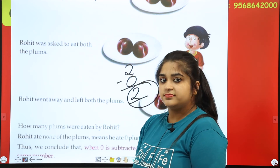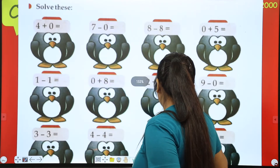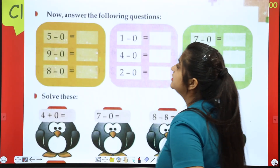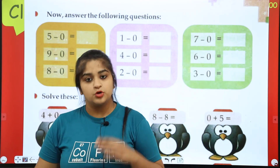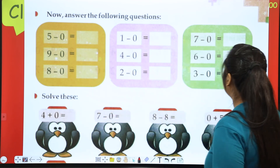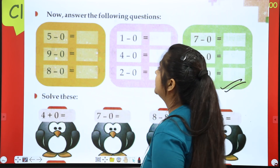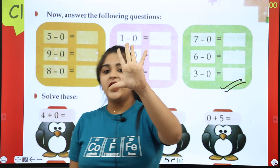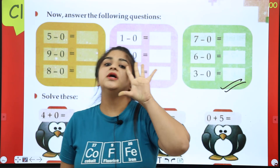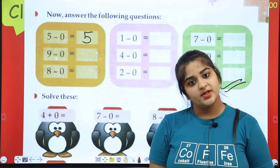Concept clear? Very good. Next page — page number 35. If we minus zero from any number, then we get the same number. You have to complete this exercise. For example, 5 minus 0: zero means nothing, so you don't have to do anything. The answer will be 5. So we will write 5 here.